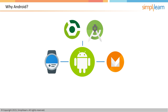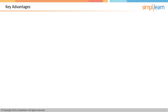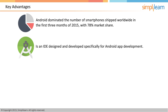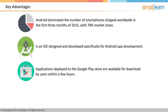There are several advantages to learning to develop applications for Android. Firstly, market share: Android absolutely dominated the number of smartphones shipped worldwide in the first three months of 2015 with 78% market share. Android Studio is an IDE designed and developed specifically for Android app development. It is blazingly fast and efficient, and you can set up a new Android project within seconds. Also, applications deployed to the Google Play Store are available for download by users within a few hours, compared to a few weeks for Apple's App Store.